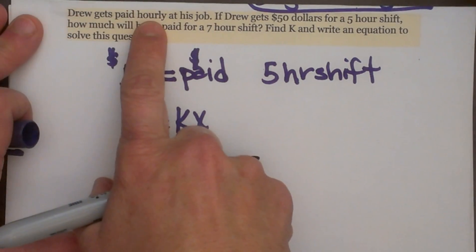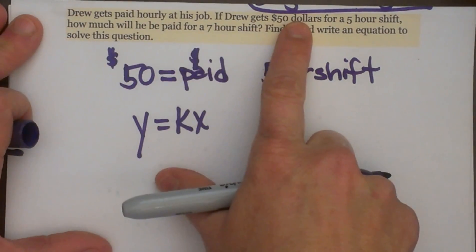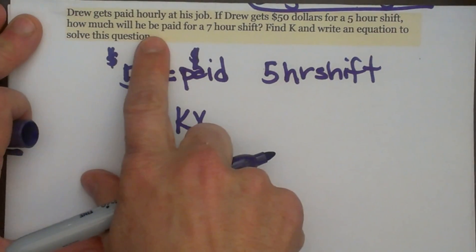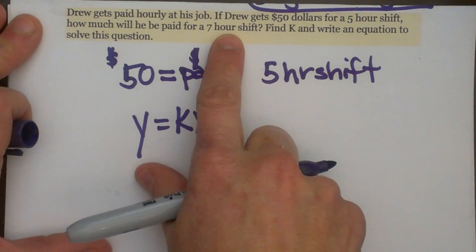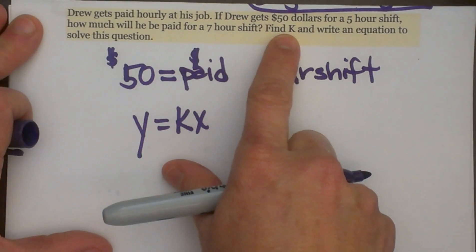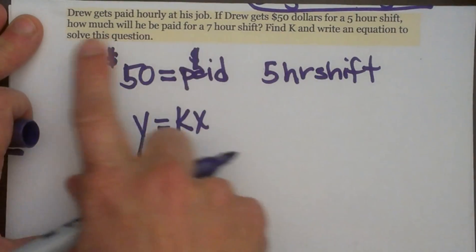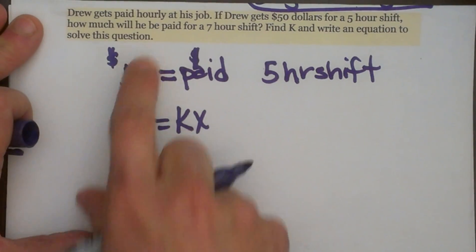Drew gets paid hourly at his job. If Drew gets $50 for a 5 hour shift, how much will he be paid for a 7 hour shift? Find K and write an equation to solve this question.